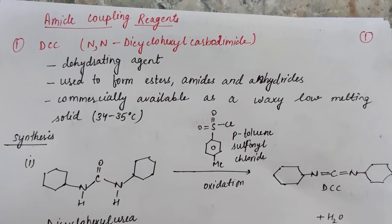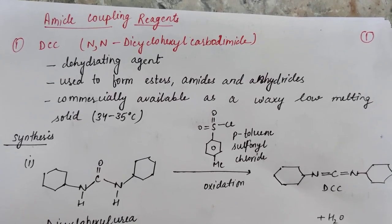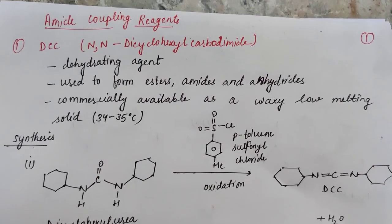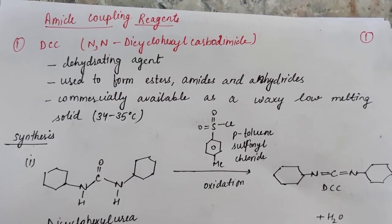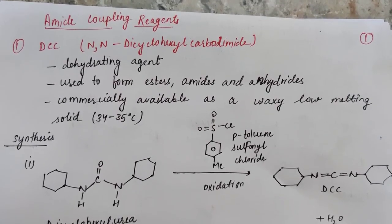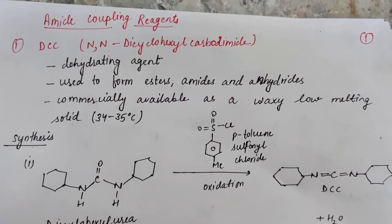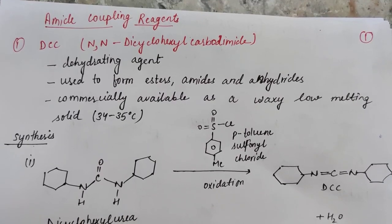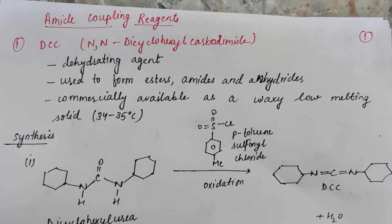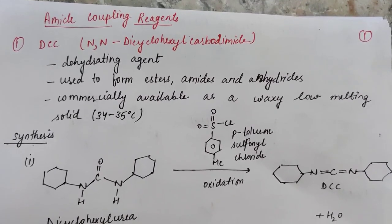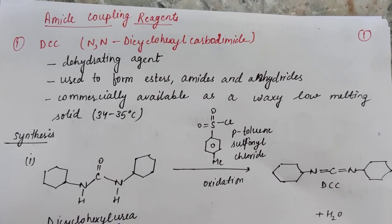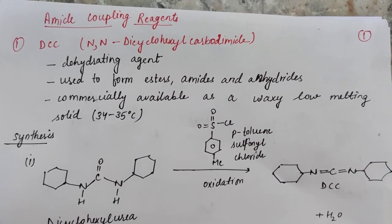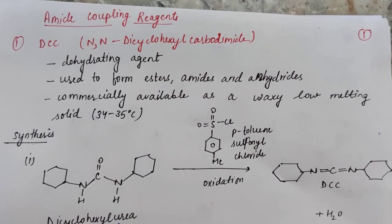Amide bond formation takes place in two steps. It requires a reaction between a carboxylic group and an amine group. The very first step is activation of the carboxy moiety, and the second step is acylation of the amino group.